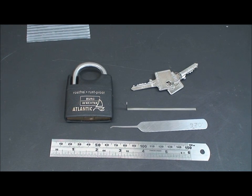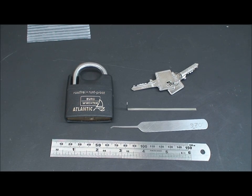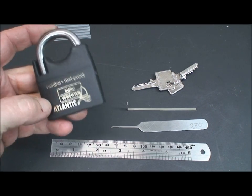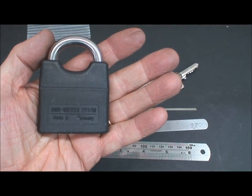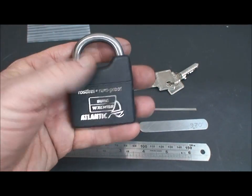Okay, we have another really nice Bergwachter German padlock. This one is the Atlantic version. It's a model 217F/50 for 50 millimeter. Really a nice lock.